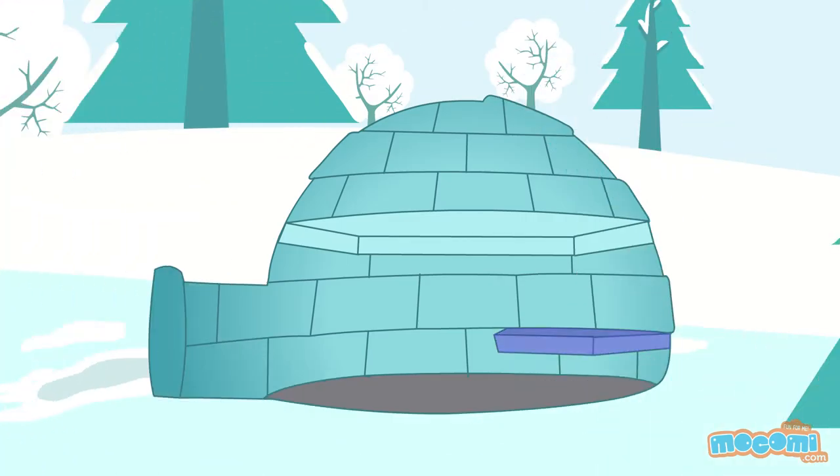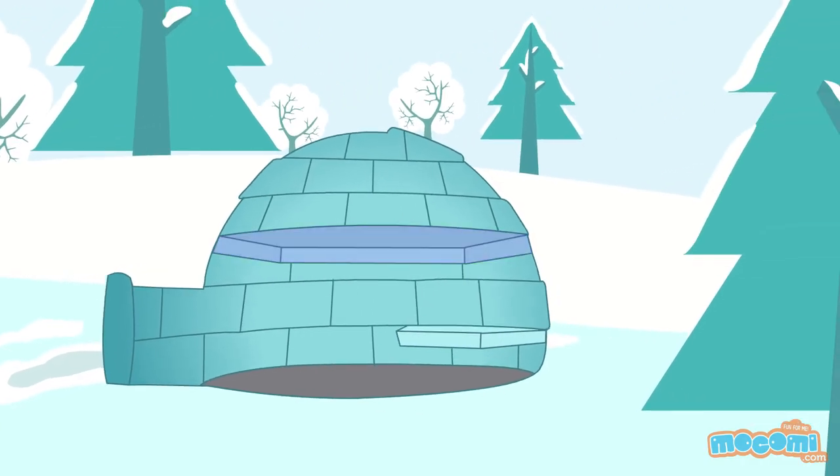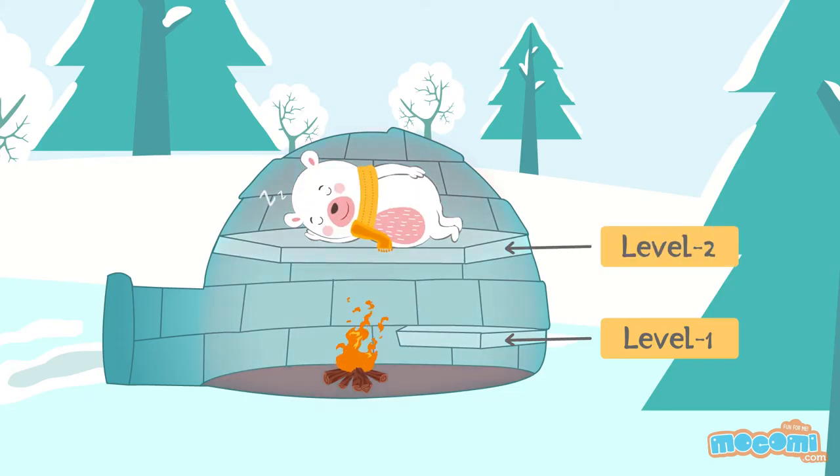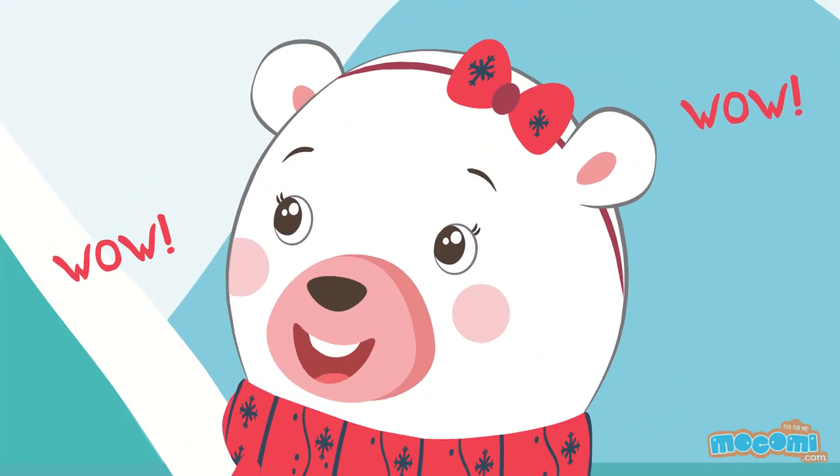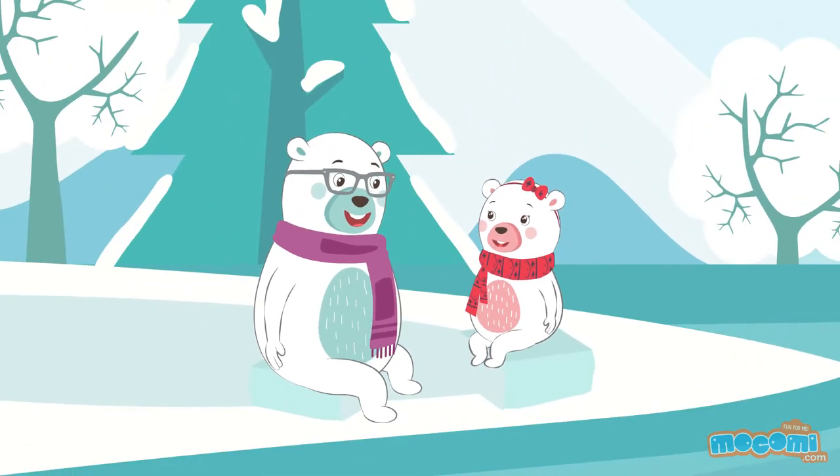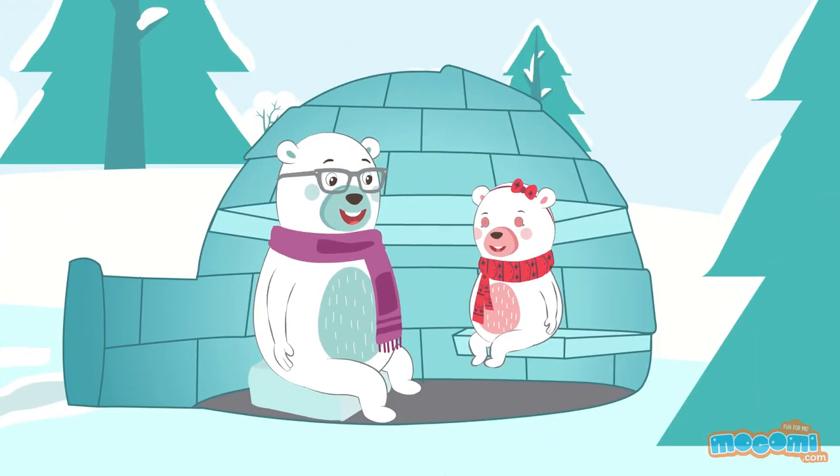The compressed snow we use to build the igloo is a good insulator and keeps the heat trapped. We also build many levels inside the igloo to help us stay even warmer. The first level is where we build the fire and above it is the second level where we sleep. The air heated up with the fire rises to the second level to keep us warm. Oh wow! I want to stay in this igloo all the time.